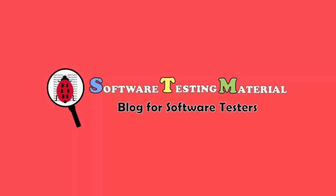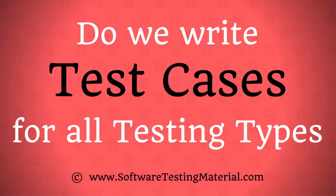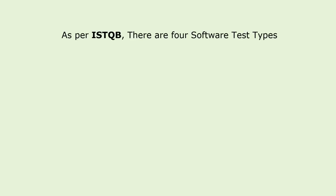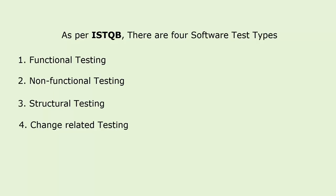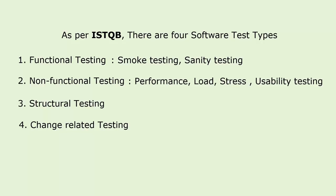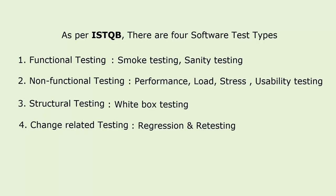Hi friends, this is Suma from SoftwareTestingMaterial.com. In this video we are going to see whether testers write test cases for all types of testing or not. As per ISTQB there are four software test types: functional, non-functional, structural, and change-related. Smoke testing and sanity testing come under functional testing. Performance, load, reliability, stress, usability, localization, and globalization come under non-functional. Structural testing is also known as white box testing, and regression and retesting come under change-related testing.